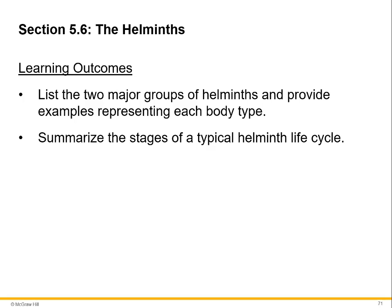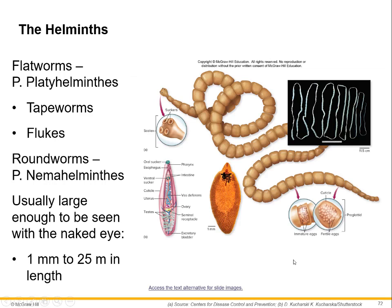Section 5.6 covers our last set of eukaryotic microbes: the helminths, which are worms. These are animals — they're multicellular, and truthfully they're not really microscopic but rather macroscopic. However, how they're transmitted and the diseases that they can cause are infectious. They're transmitted by food or water. We're going to look at the two major groups of helminths, provide examples representing each body type, and summarize the stages.